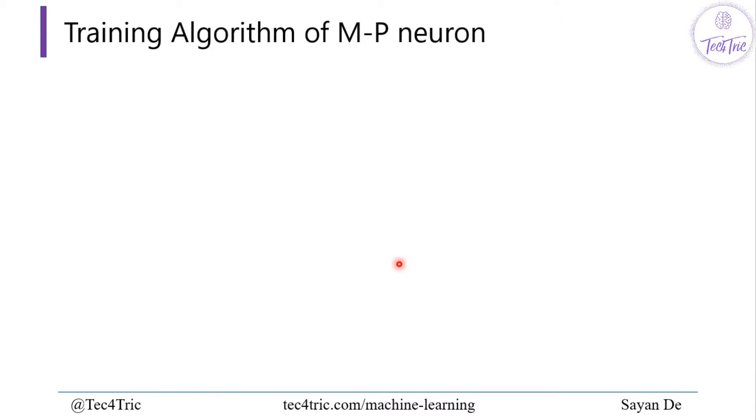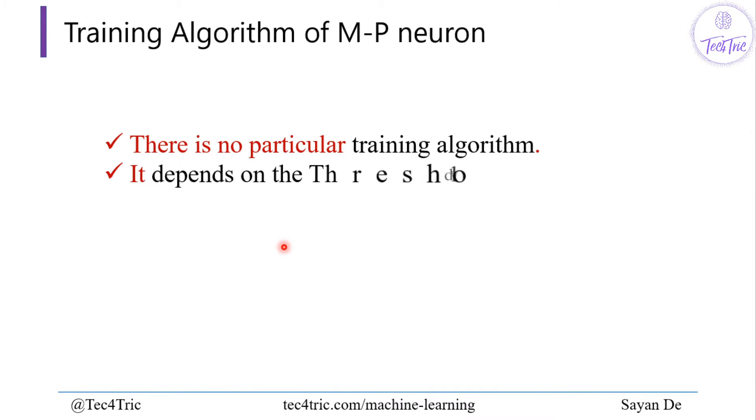What is the training algorithm of McCulloch-Pitts Neuron? Basically there is no particular training algorithm. It totally depends on the threshold value and activation functions.